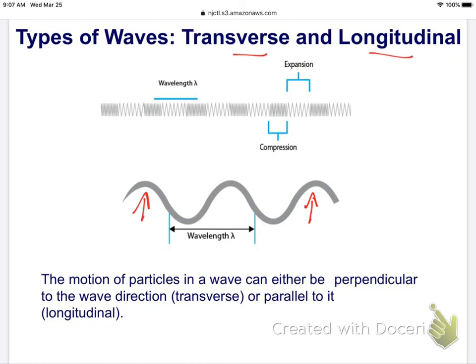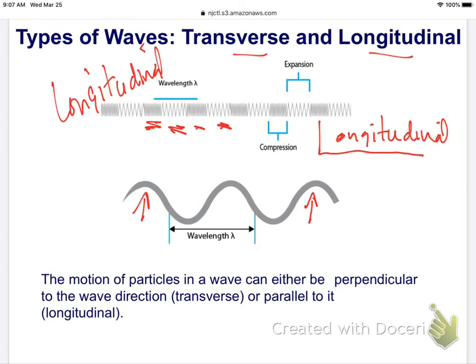This would be a transverse wave where the particles are moving perpendicular, or longitudinal. Longitudinal is this type of wave here, where we have compressions and expansions. Longitudinal means the particles are moving parallel to the direction of the wave motion. The wave is moving this way, the particles are moving that way. Longitudinal, parallel. Whereas transverse, I write it this way with a symbol to show that the wave and the wave particles are moving perpendicular to one another.